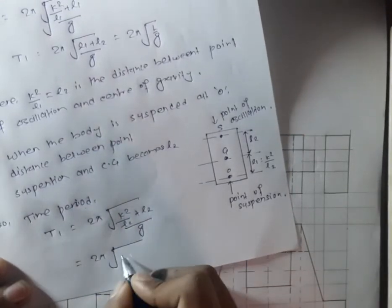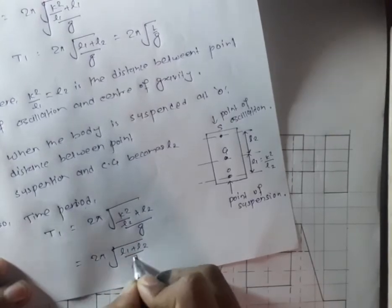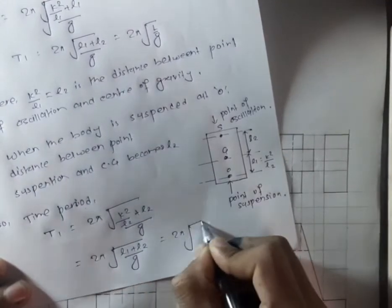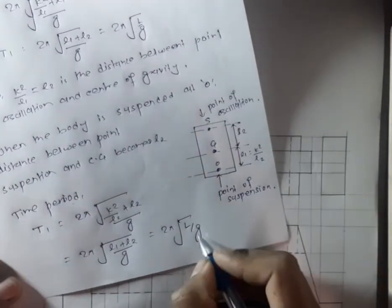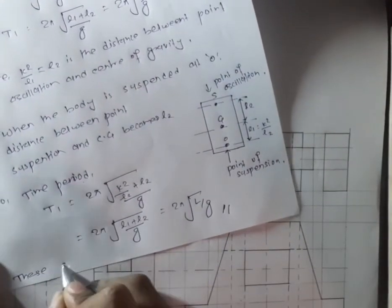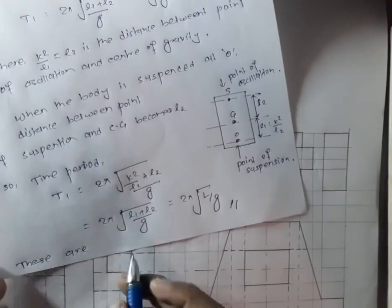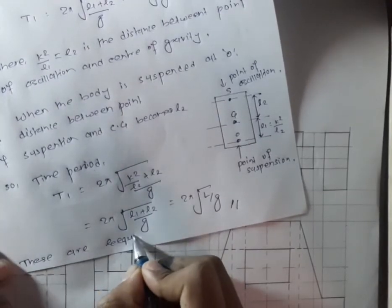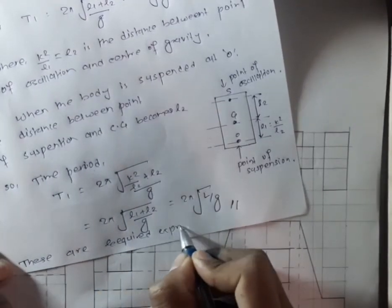This gives 2π root under (L1 + L2) upon G, equal to 2π root under L upon G. This is the required proof of the interchangeability of point of suspension and point of oscillation.